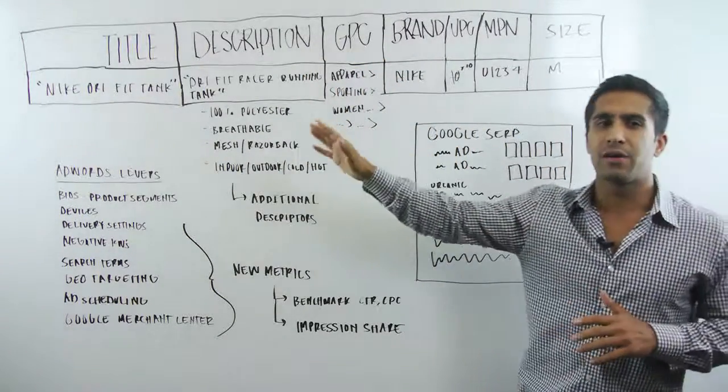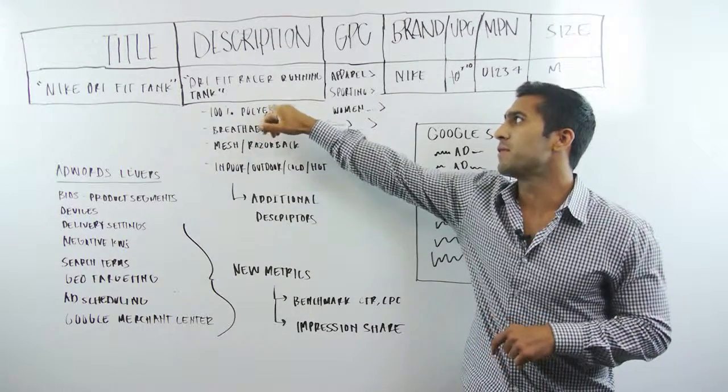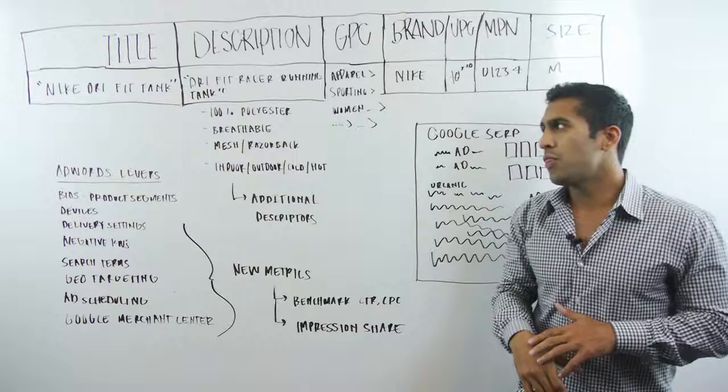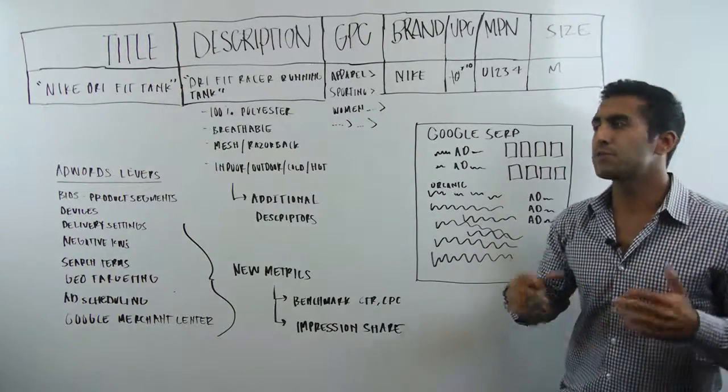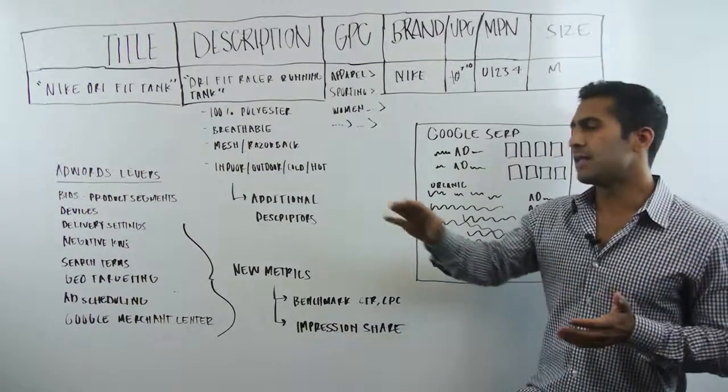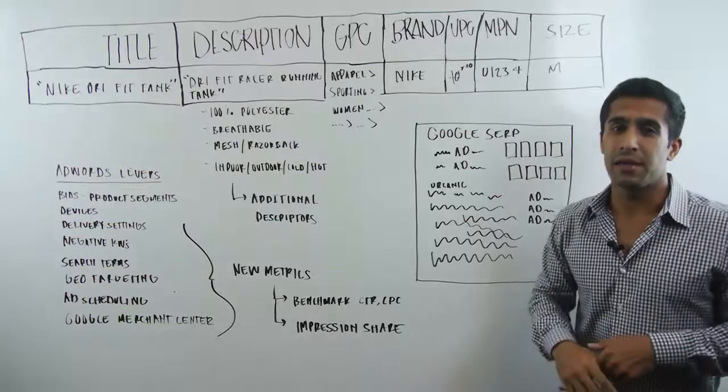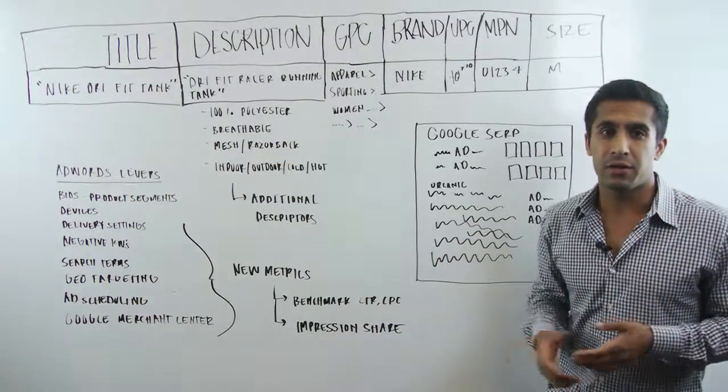For instance, here we have Nike dry fit tank as the title. For the description, we just have dry fit racer running tank. Those are the core terms that Google's going to use. Now if I'm searching dry fit racer tank, and I have a decent bid on that product within my PLA campaign, I'm probably in pretty good shape, and I'll probably show up for that query.